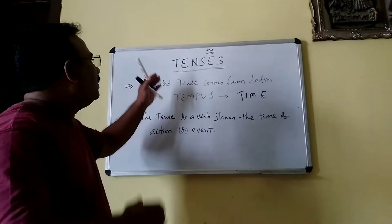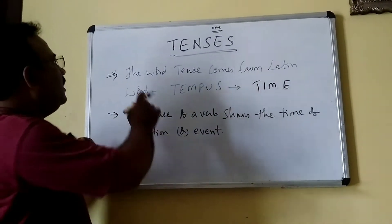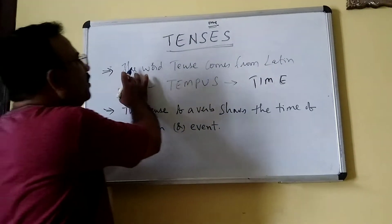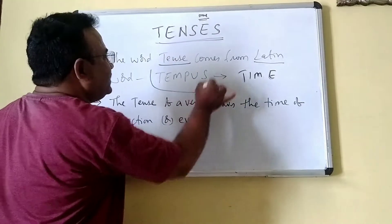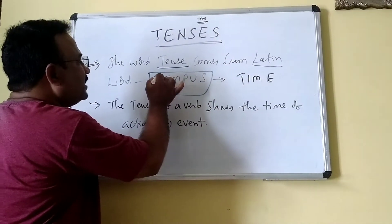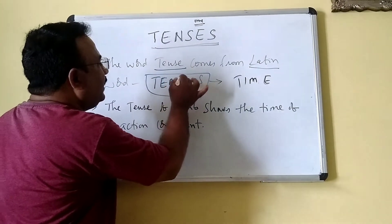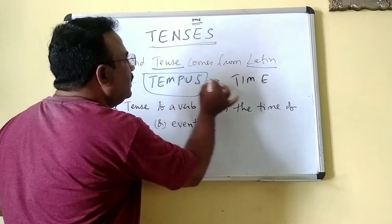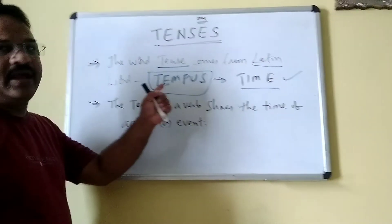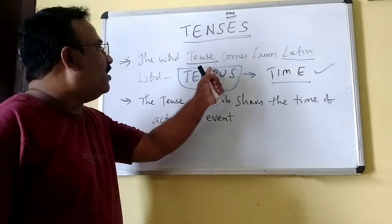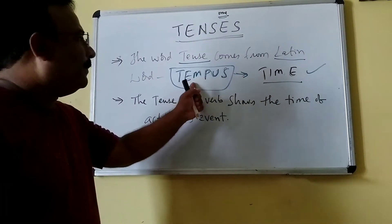Now, what is the meaning of tense? How does it come from? The word tense comes from the Latin word 'tempus' — T-E-M-P-U-S. Tempus means time.